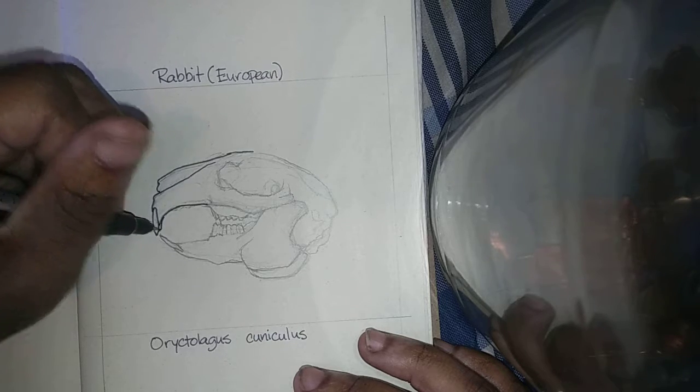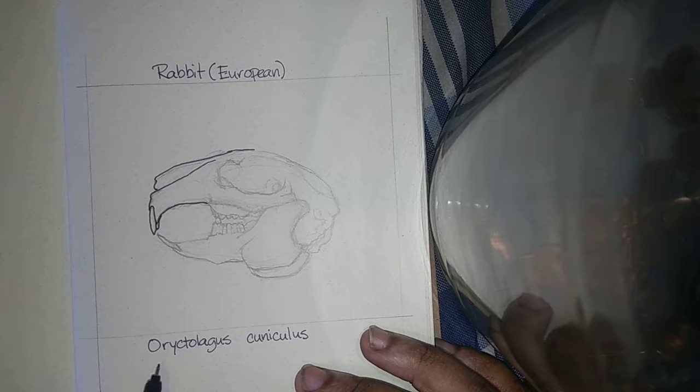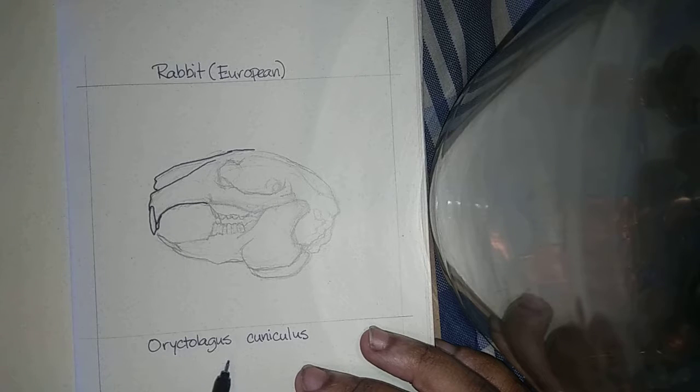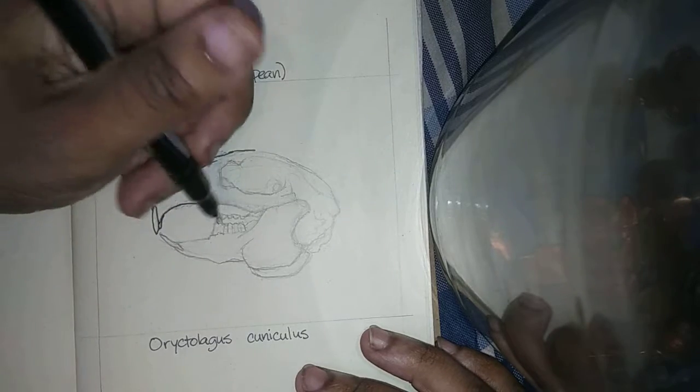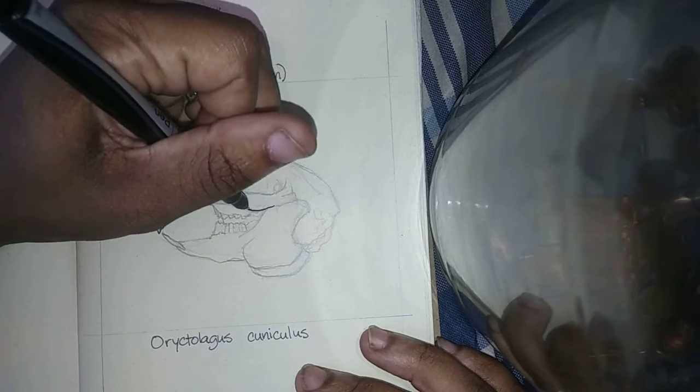And the scientific name for rabbit is, let's see if I can pronounce this, Oryctolagus, Oryctolagus, Cuniculus. It's an odd name. Anyway, the rabbit.